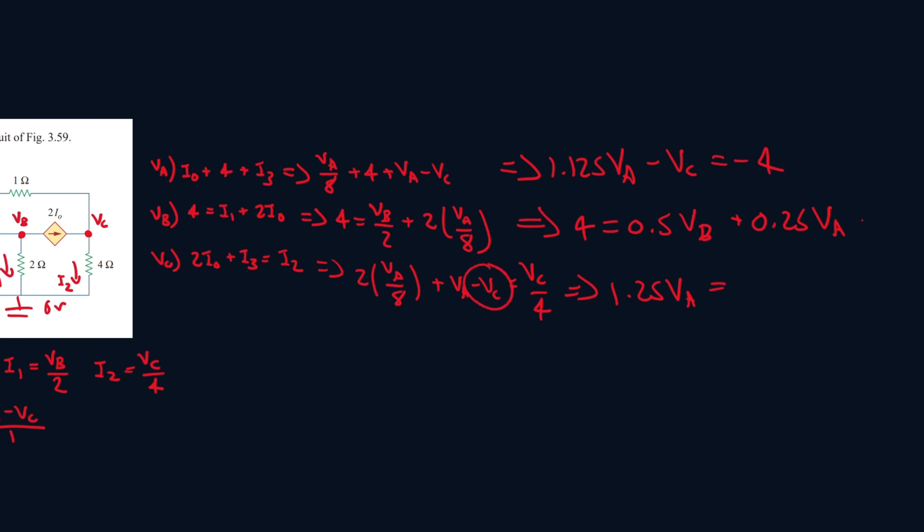And let's bring the minus VC to the other side, so it'll be VC over 4, so 0.25, and then we add 1VC, so it'll be 1.25 VC. These two cancel out, so we see VA is equal to VC.